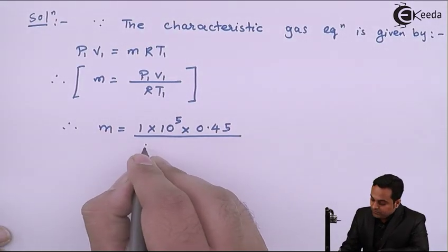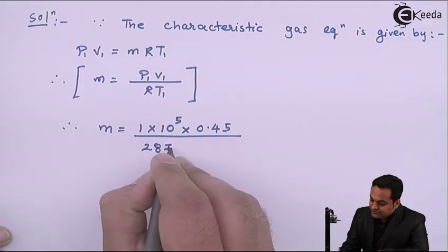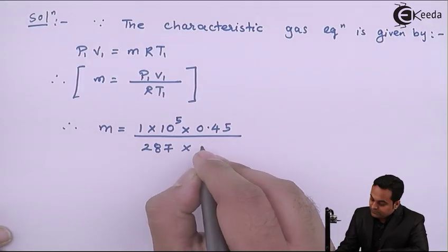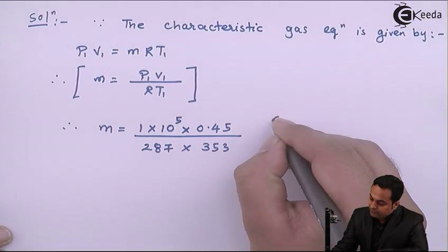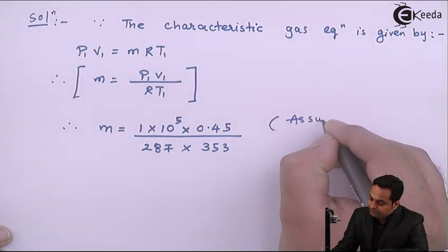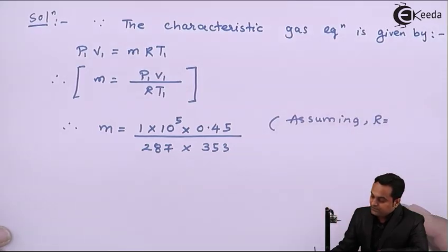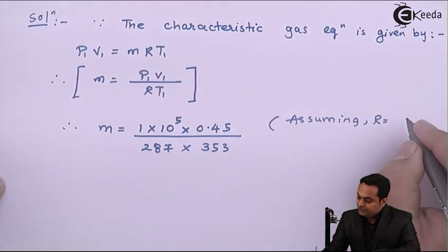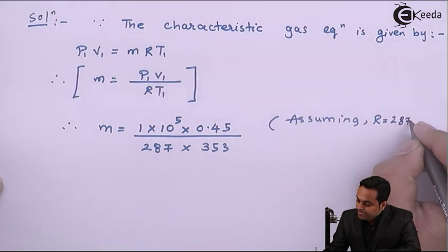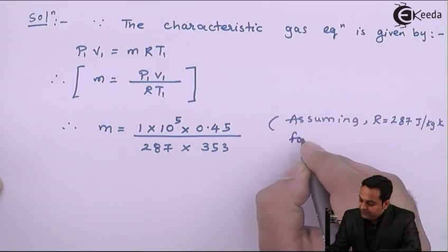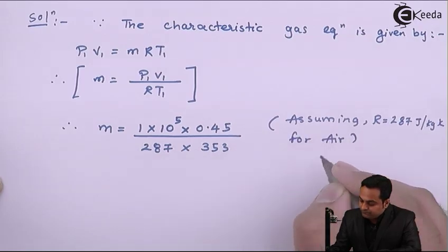that is 287 joule per kg Kelvin for air, and T1 is 353 Kelvin. So I'll write down assuming R, which is the characteristic gas constant, as 287 joule per kg Kelvin.